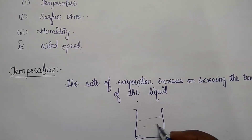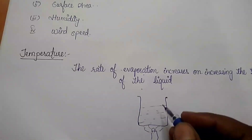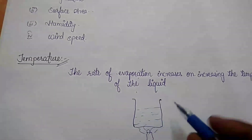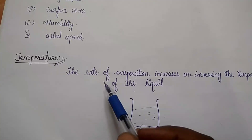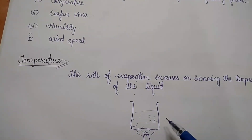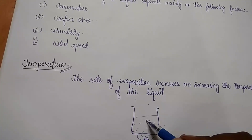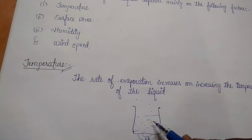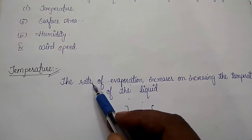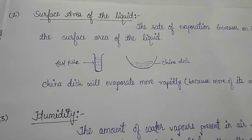Suppose we have a beaker filled with water and we start giving heat. When we increase the temperature, we are giving more heat, so the particles which are constantly moving collide with each other and can be converted into vapor form. This heat energy makes the kinetic energy high; when kinetic energy is high, the particles start colliding and convert into vapor form. So the rate of evaporation increases on increasing the temperature of the liquid.